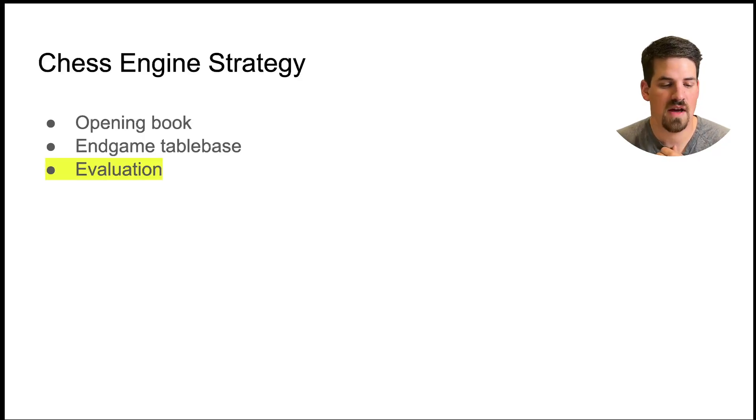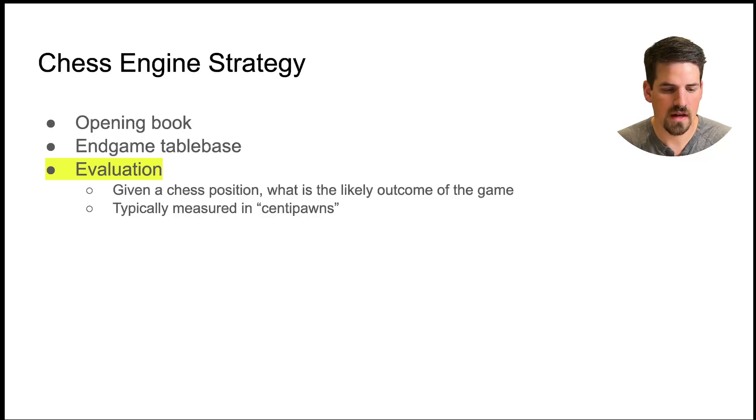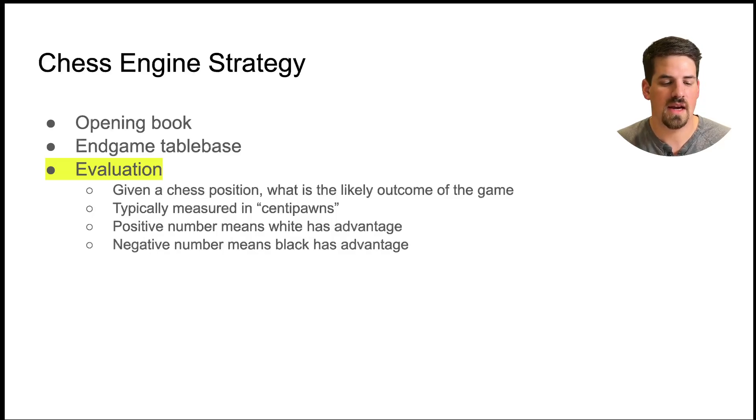So chess engines play a little bit differently but in the same way they focus on four major sections of the game. Opening book, so a set of pre-programmed opening sequences. End game table base which just refers to like I mentioned before at the end when there's fewer number of pieces on the board a database can hold the correct moves. But the two that I want to talk about today are evaluation which basically talks about given a current position what is the likely outcome of the game. This is measured in what's called centipawns and a centipawn can be thought of as one hundredth of a pawn's worth of advantage. So if you have an evaluation of one hundred that would mean that the white player has the equivalent of one additional pawn's worth of advantage. A positive number means an advantage for white and a negative number means an advantage for black.